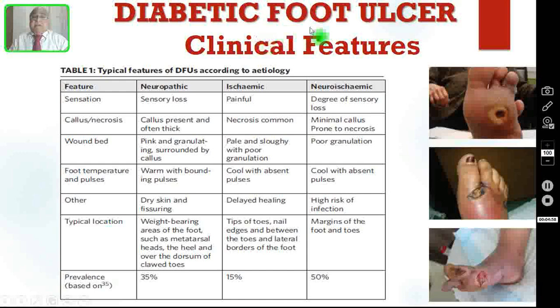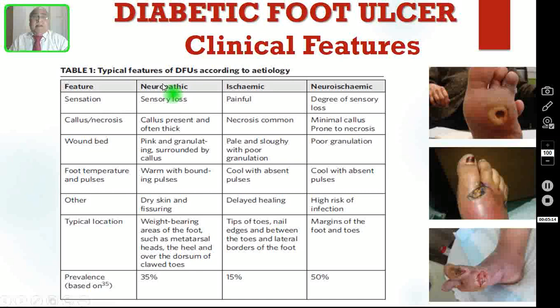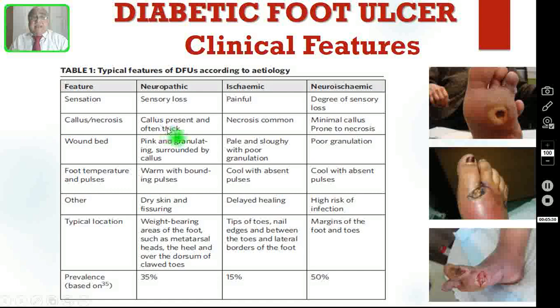Coming to the clinical features of diabetic foot ulcer — there are three types: neuropathic, ischemic and neuro-ischemic. Regarding sensation: in neuropathic ulcer there will be sensory loss; in ischemic it is usually painful; in neuro-ischemic there will be a degree of sensory loss. Regarding callus and necrosis: in neuropathic ulcer there will be callus present, often very thick; whereas in ischemic there will be necrosis of the tissue; in neuro-ischemic there will be minimal callus and these ulcers are prone to necrosis.